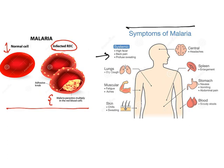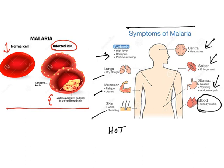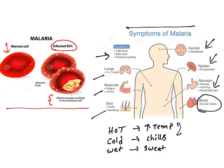Main symptoms include high fever, back pain, profuse sweating, dry cough, muscle weakness, pains, chills, severe headache, spleen enlargement, nausea, vomiting, abdominal pain, and blood in stools due to hemolysis. The disease is typically considered in three phases: the hot phase when body temperature increases, the cold phase when people get chills, and the wet phase with profuse sweating.